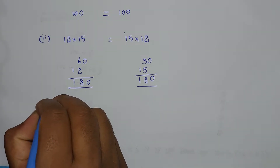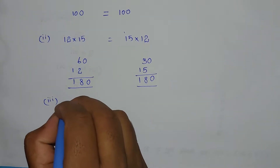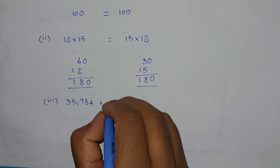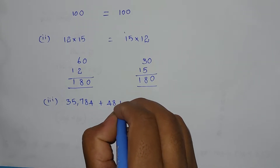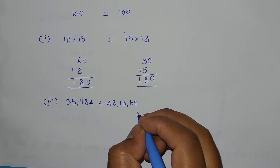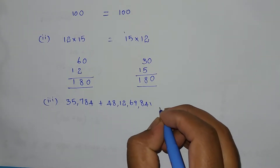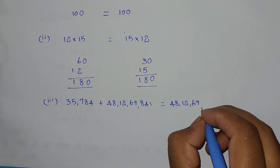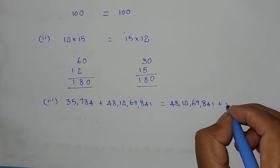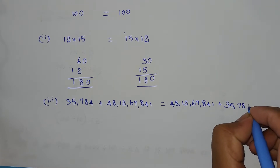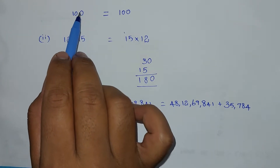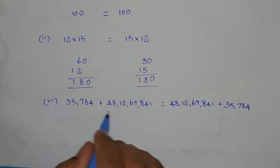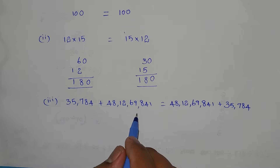Problem 3 — addition with large numbers. 35,784 plus 48,12 and 69,841 equals 48,12 and 69,841 plus 35,784. We've already used small numbers to prove commutativity; now with large numbers, even when we change the order, the result is the same. This confirms commutativity in addition.